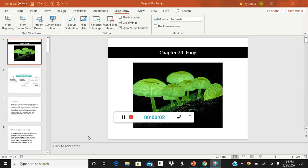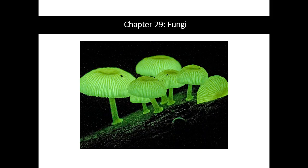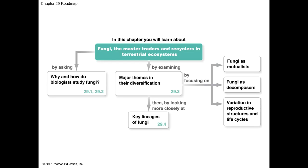Hi everyone, this is a lecture on chapter 29 which deals with fungi. In this lecture we'll be discussing all about the properties of fungi and their influences, their life cycle, how they are impactful in an ecosystem. In this chapter we're going to talk about how fungi are master traders and recyclers in terrestrial ecosystems, playing an important role as decomposers.